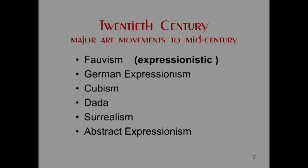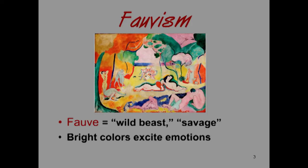We're going to start with Fauvism, which is a French expressionistic art movement. In 1906, there was an art exhibit that showed this work and a number of other artists, and one of the critics came and hated it. He said that these works were Fauve, which means wild beast or savage, untamed. Fauve can be used either as a noun or as an adjective. And so the artists took as the name of their art movement Fauvism, a French expressionistic art movement that emphasizes the idea of bright colors exciting the emotions.